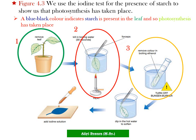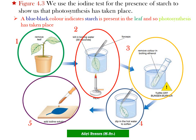Then we turn off the Bunsen burner. The leaf is then dipped in hot water to soften it. On the fifth step, we add a drop of iodine solution. If the leaf changes to blue-black color, it has starch, which means photosynthesis has taken place. If it does not change to blue-black, there is no starch and no photosynthesis.